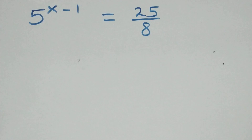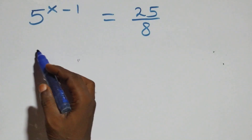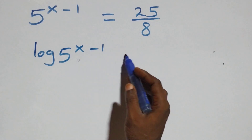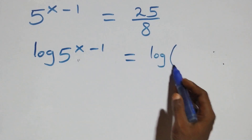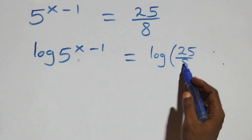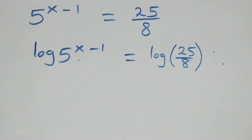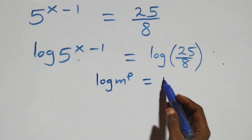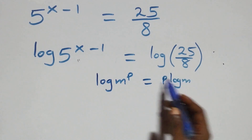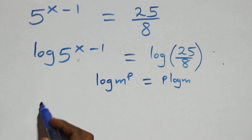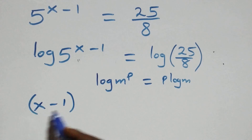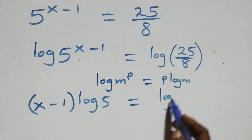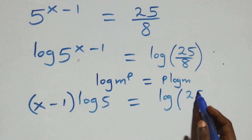Taking the log of both sides: log of 5 raised to the power x minus one equals log of 25 over 8. Applying the power rule — log m raised to power p equals p times log m — the power x minus one comes down, giving x minus one times log 5 equals log of 25 over 8.